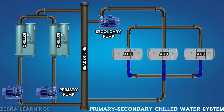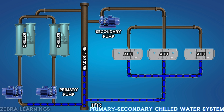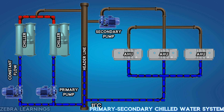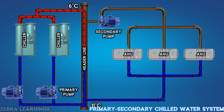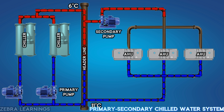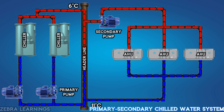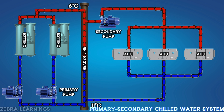Water from the AHU returns to the header line at 11 degrees Celsius. The primary pump sends the water from the header line to the chiller. The primary pump is running at a constant speed so the chiller can get a constant water flow. The chilled water from the chiller leaves at a temperature of 6 degrees Celsius and goes to the header line. The secondary pump sends the chilled water from the header line to the AHU in the building. The return water from the AHU is then sent back to the chiller by the primary pump, and this process continues continuously.